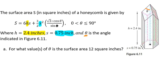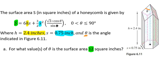So we're finding our capital S here. It says, for what values of theta is the surface area 12 square inches? So our surface area is 12 — the surface area is that 12 square inches.